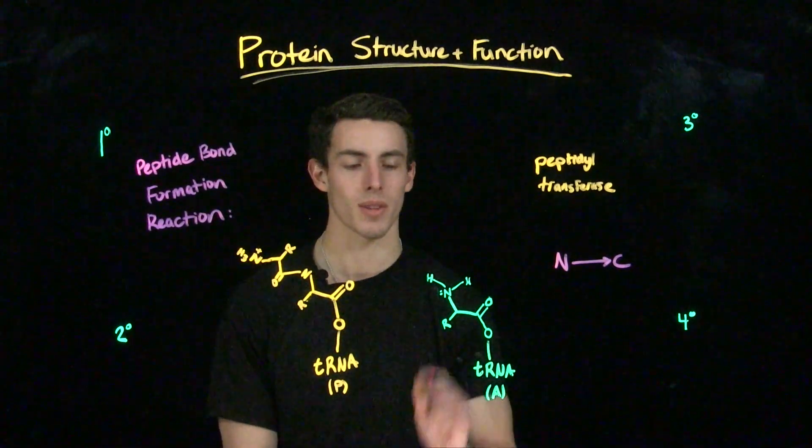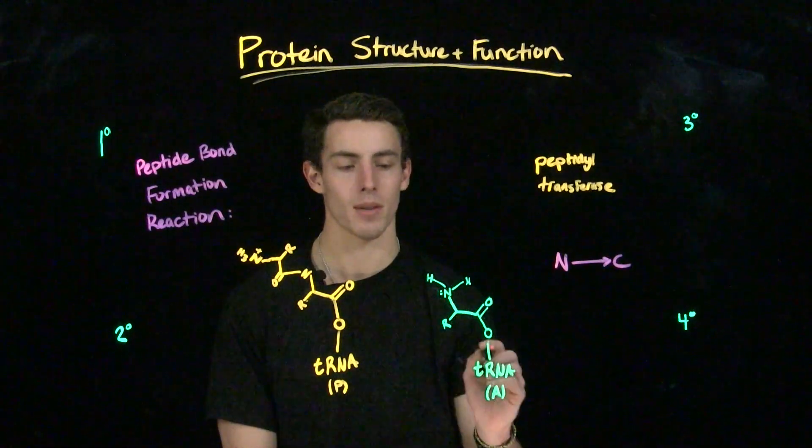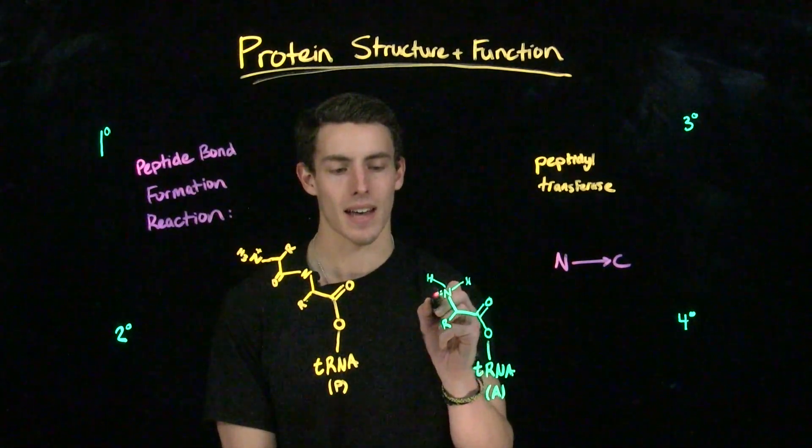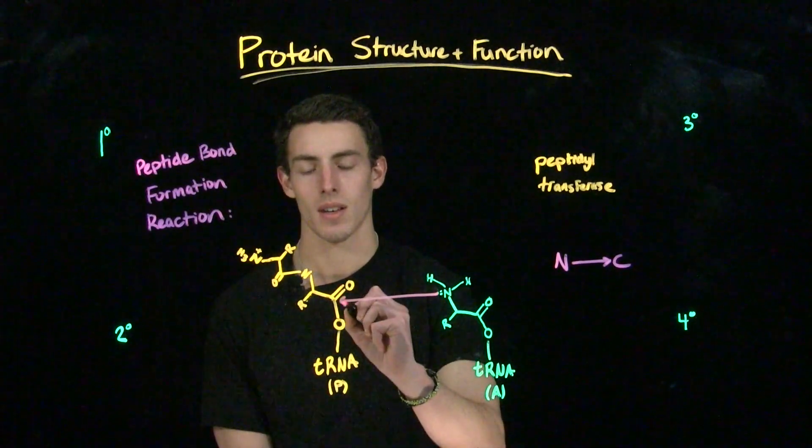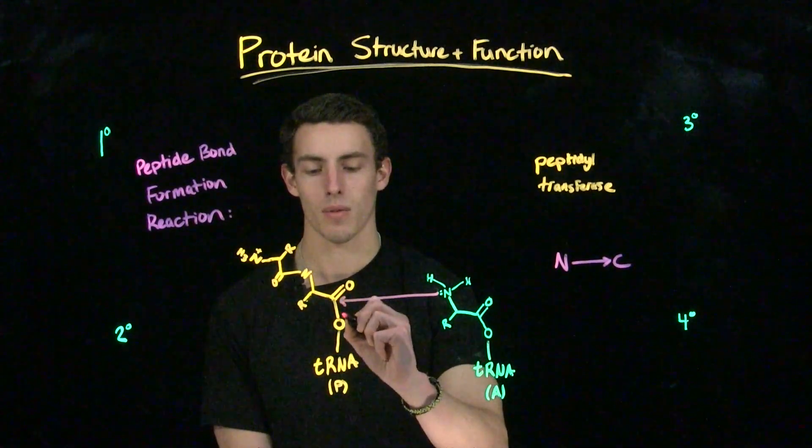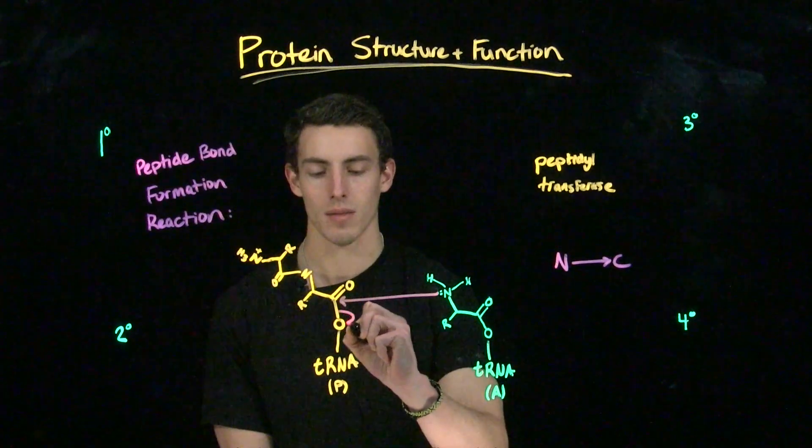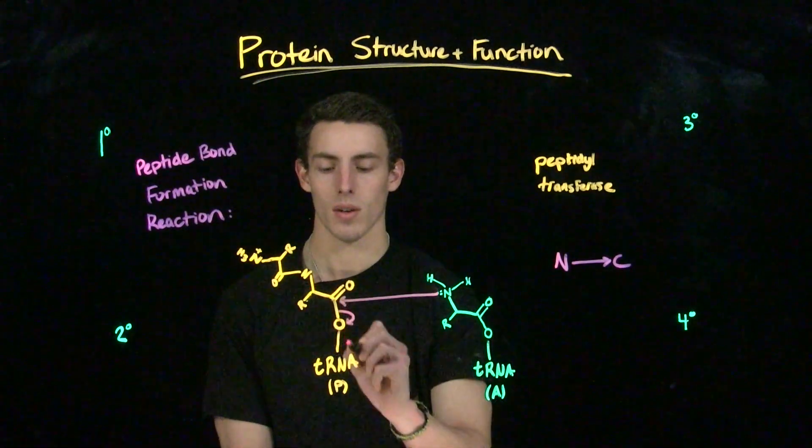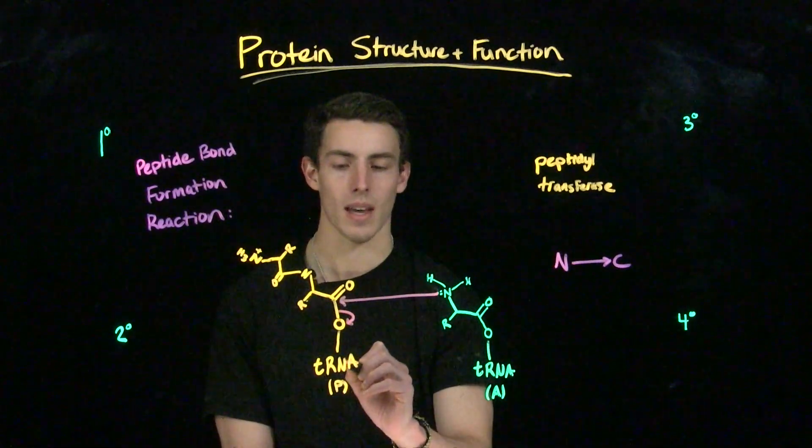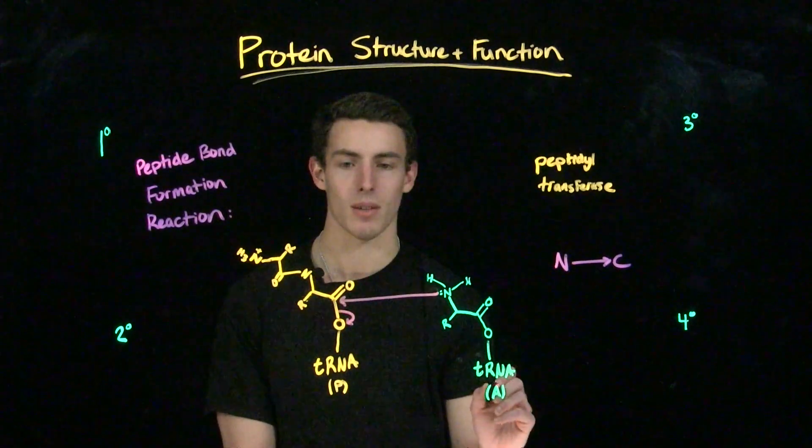Peptide bond formation occurs when the lone pair on the amino group, the aminoacyl amino acid, attacks the carbonyl carbon of the peptidyl amino acid. Attack of this carbon forces the oxygen to leave, which frees the peptidyl RNA from the peptidyl tRNA, and it transfers it over to the aminoacyl tRNA.